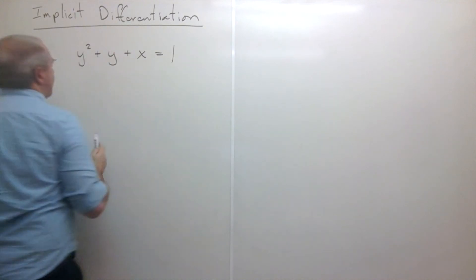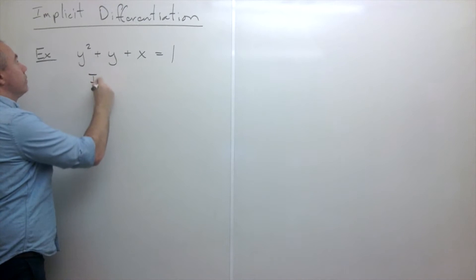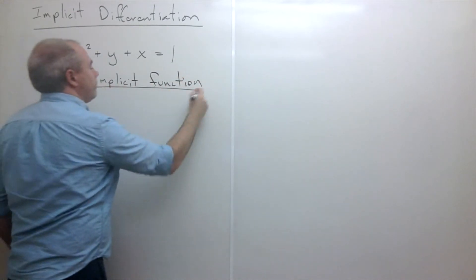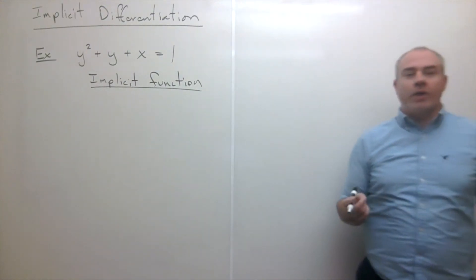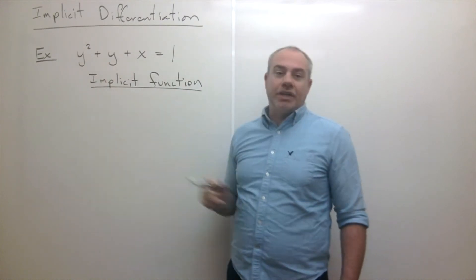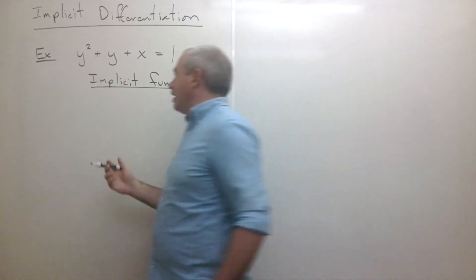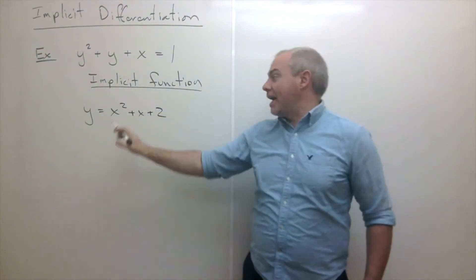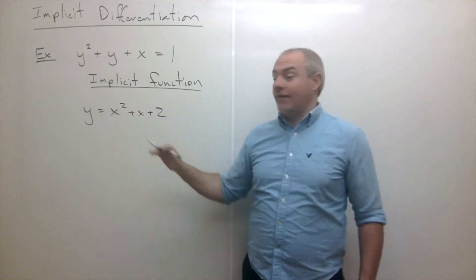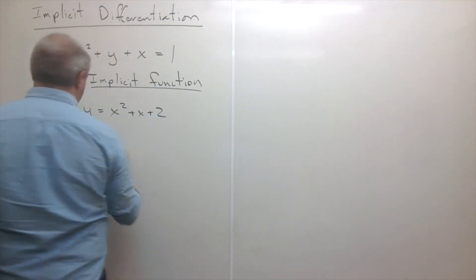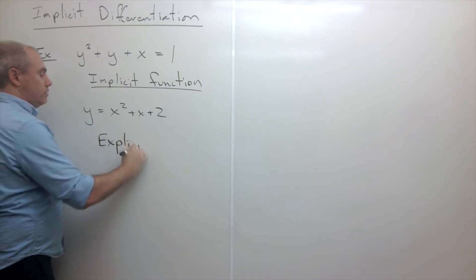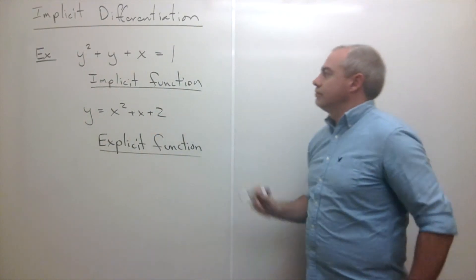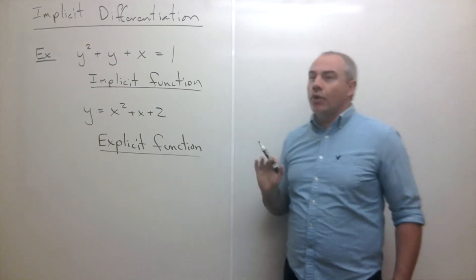We call this an implicit function — when a function is written in such a way that I can't solve it for y. If I can solve it for y, so it looks like y equals x squared plus x plus 2, I call that an explicit function. So this is an implicit function, and that is an explicit function.